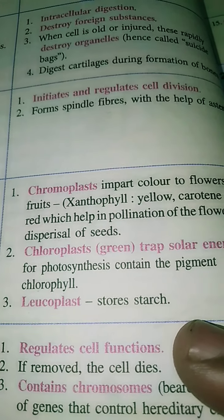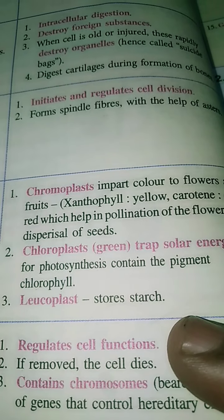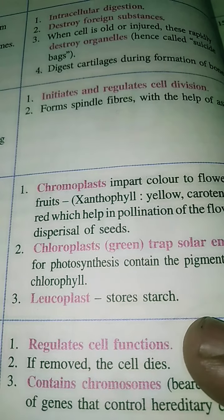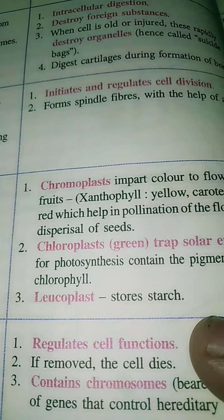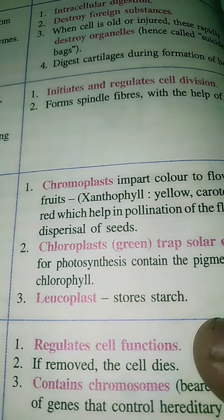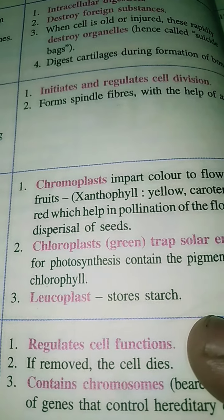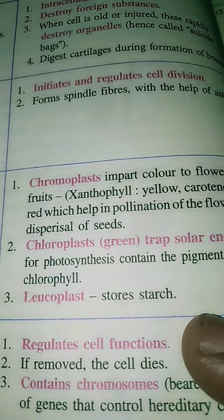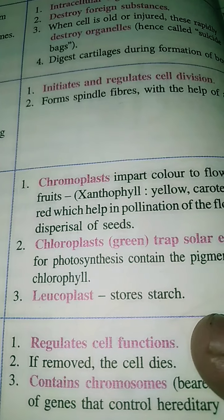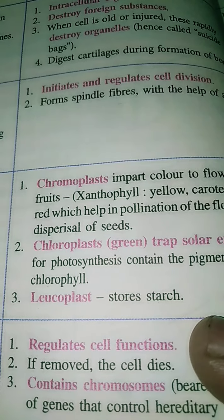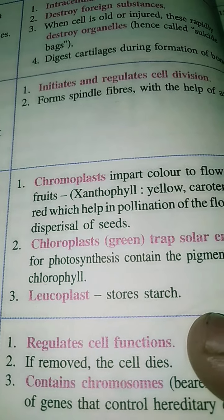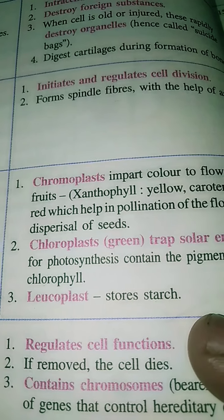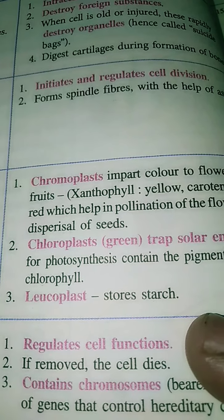The second type is chloroplasts. As we already know, chloroplasts contain the pigment chlorophyll, which gives green color to the major parts of plants — especially the leaves and tender stems. During photosynthesis, plants acquire light energy from the sun with the help of chlorophyll present in chloroplasts. The last type of plastid is leucoplast. It is a colorless plastid and mainly helps in the storage of starch. Potato is a very good example of a food item that contains leucoplasts in large quantity.